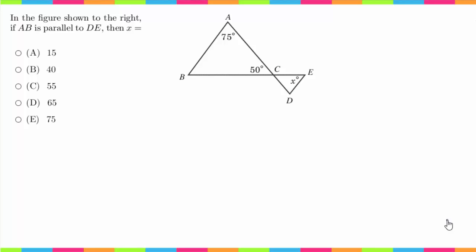So the key piece of information here is that they tell us that AB is parallel to DE. So I'm going to go ahead and extend some of these lines. Just pretend that that goes directly along AB and pretend that this goes directly along DE.